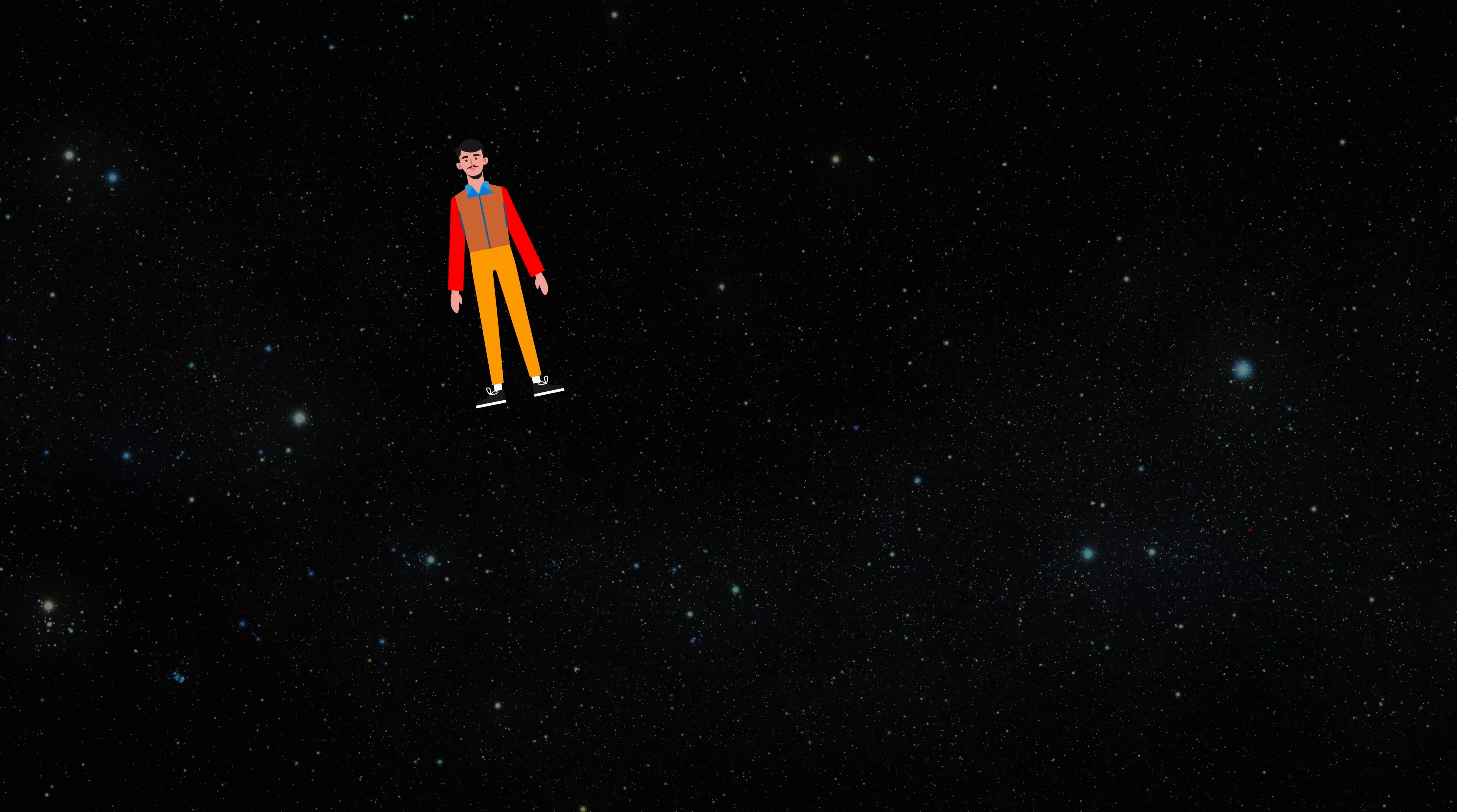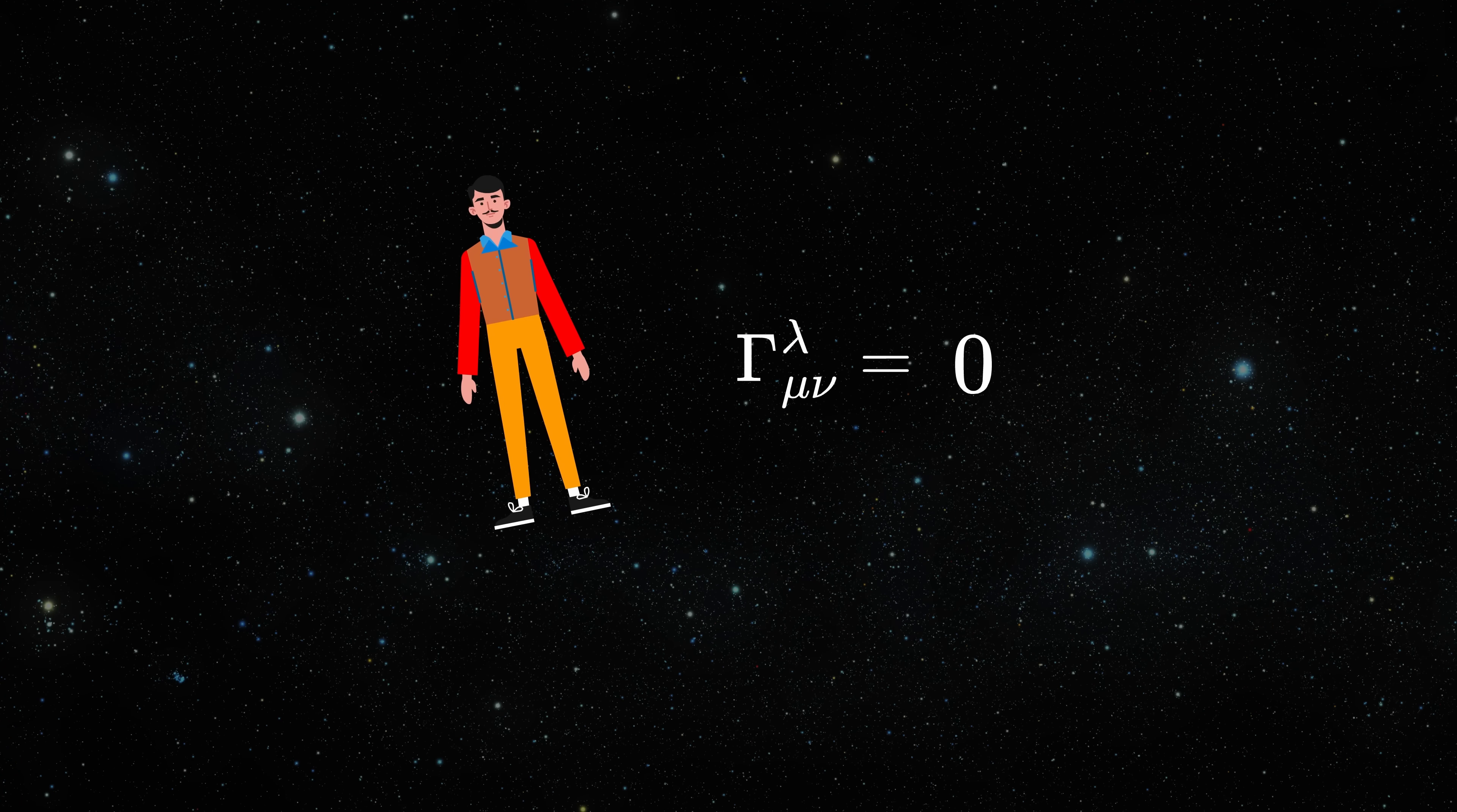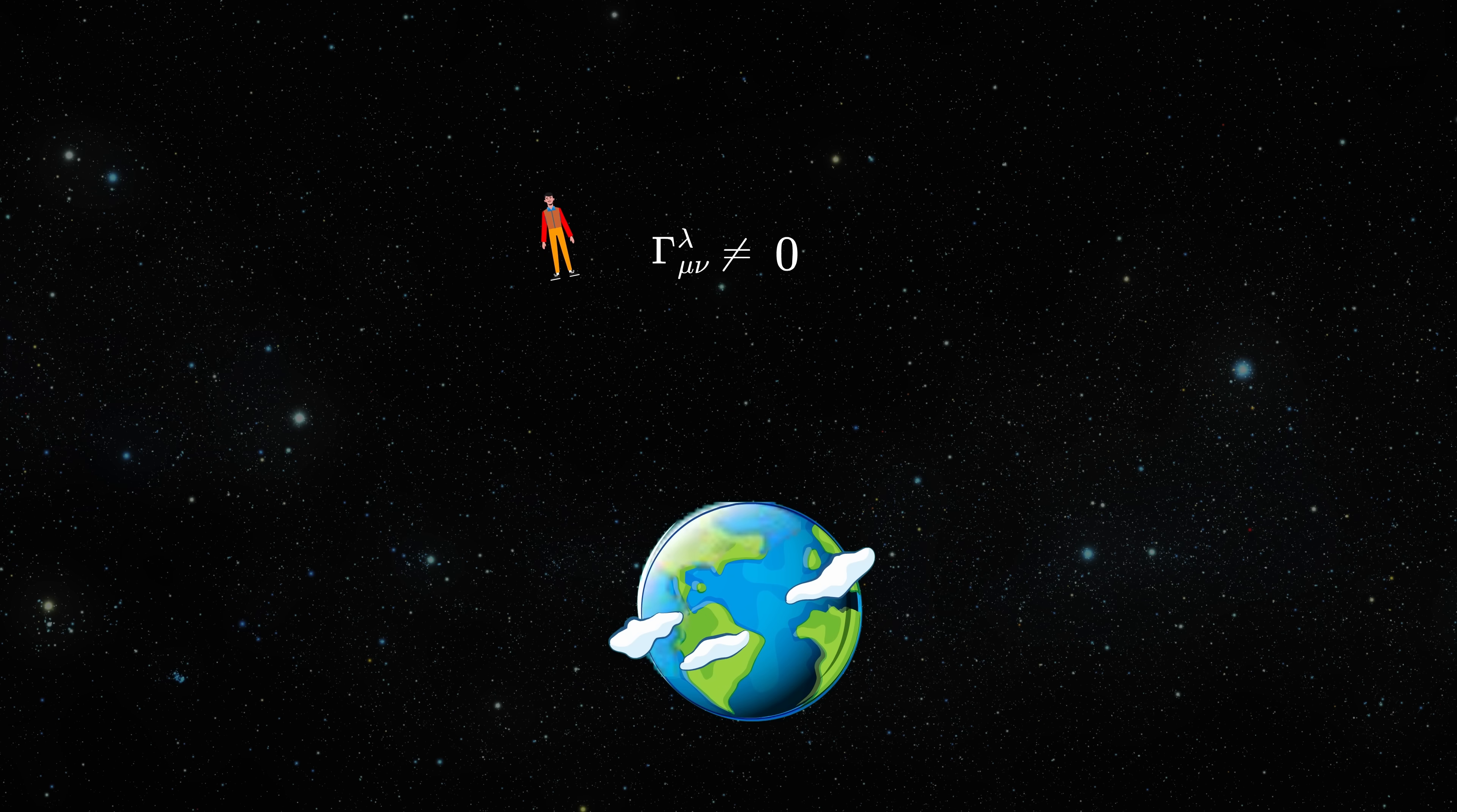And what about these Christoffel symbols in general relativity? Well, they kinda represent the gravitational force. But if you are freely falling with the object, they are zero, but globally they are not zero everywhere if the space-time is curved. So this tells us that the gravitational force is also not real, since it's not a tensor. It is just the effect of the curvature of the space-time. A side note, in general relativity, we look for quantities that are tensors under general coordinate transformations, not just Lorentz transformations. But Lorentz transformations are a subset of these general coordinate transformations.